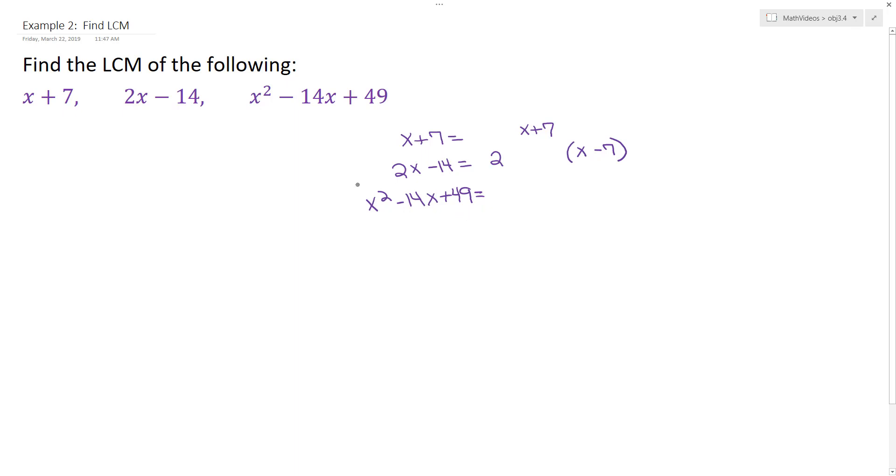When you reverse FOIL, you need to think about what two numbers multiply together to give you that constant term 49, but add together to give you your middle coefficient, which is negative 14.